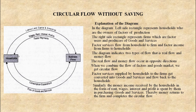This inner line is called the real flow and the outer line is called the money flow. So in this way the circular flow of income is complete. But this is where there are no savings — households are not saving any money and business firms are also not saving anything. This is the circular flow without saving.